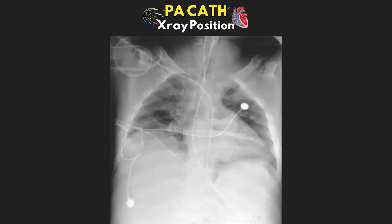Now here in example eight, take a look and see if you can identify what the problem is. In this example we actually have a subclavian approach. The problem is that they ended up putting it in the subclavian artery, and therefore, if we follow the path, instead of coming down along the patient's right side where our vena cavas typically are, we cross over the midline and end up going down what is the patient's aorta.